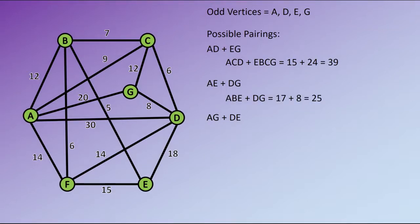For AE and DG we can go ABE and then straight from D to G. That is our shortest possible route for those. And for AG and DE we simply have those edges. A to G is 20 and D to E is 18.